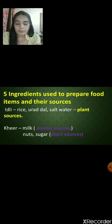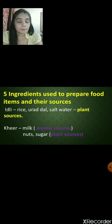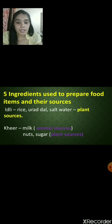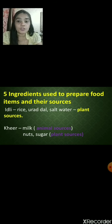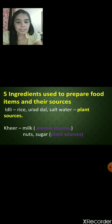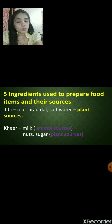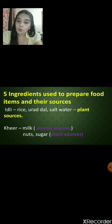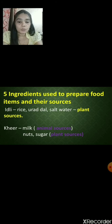For kheer, we require milk, sugar and nuts. Milk comes from animal sources, and nuts and sugar come from plant sources. If you are eating non-veg items like chicken curry, we get chicken or meat from animals. Spices we get from plants. Oil and ghee — we get oil from plants and ghee from animals. These are the different sources and different ingredients.